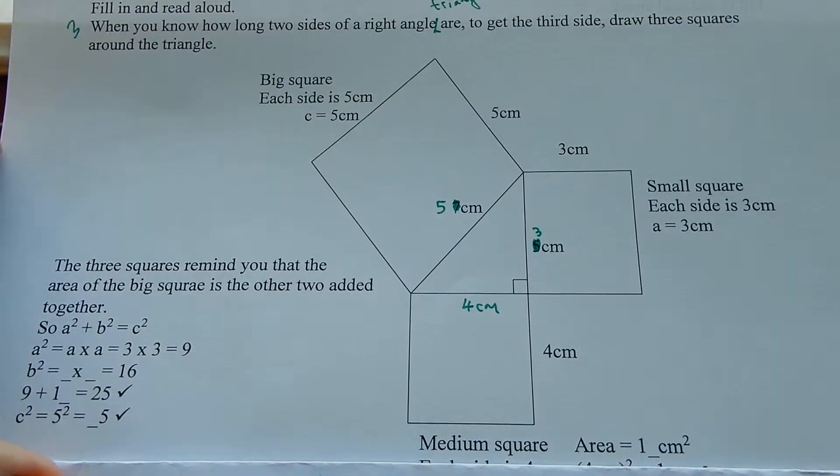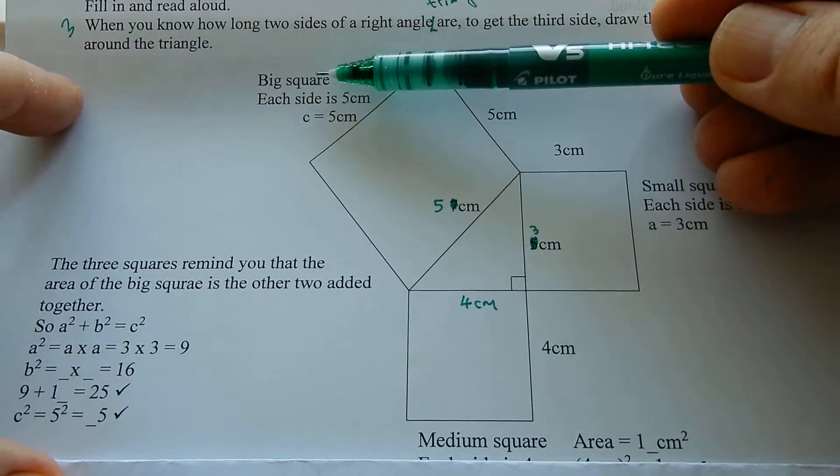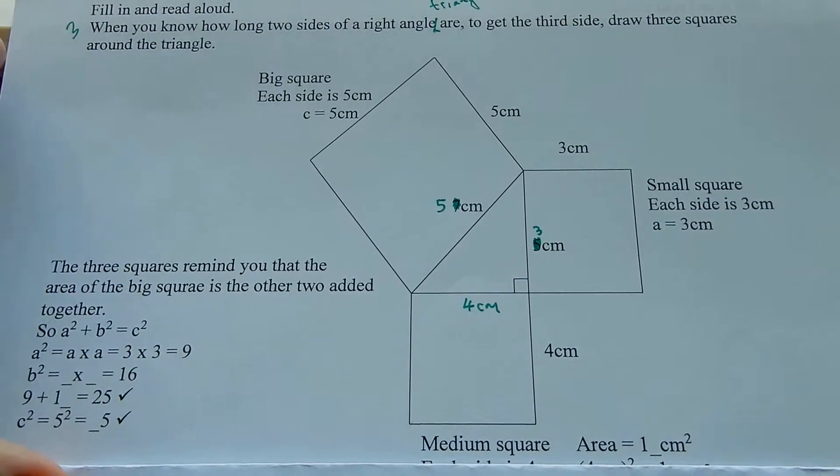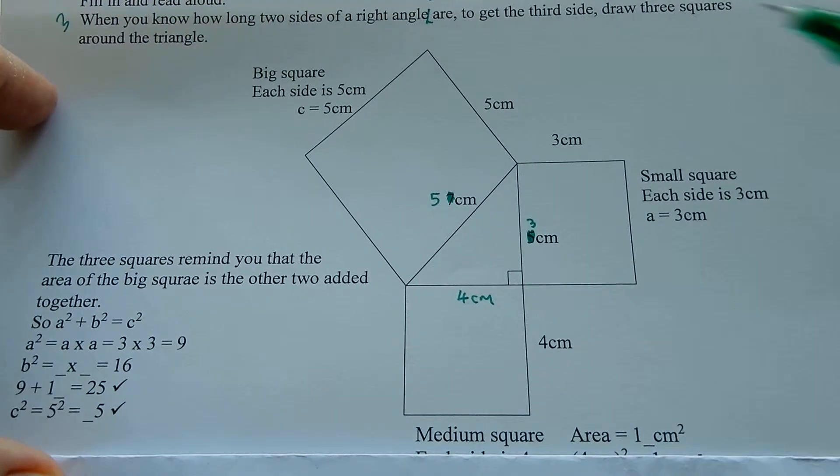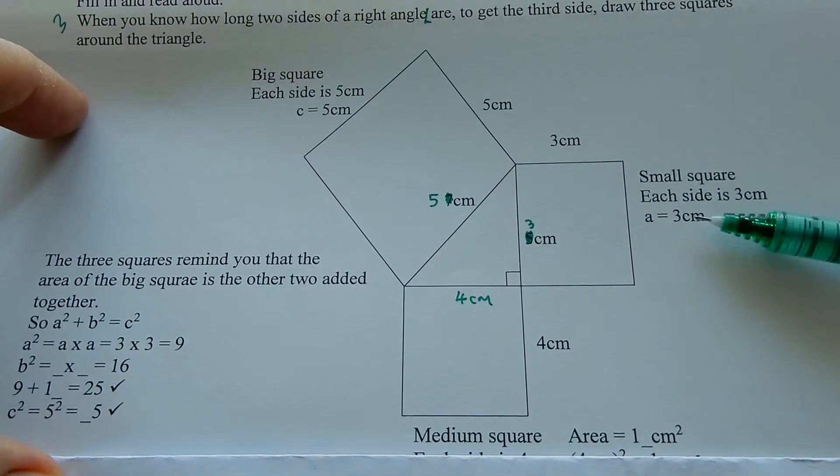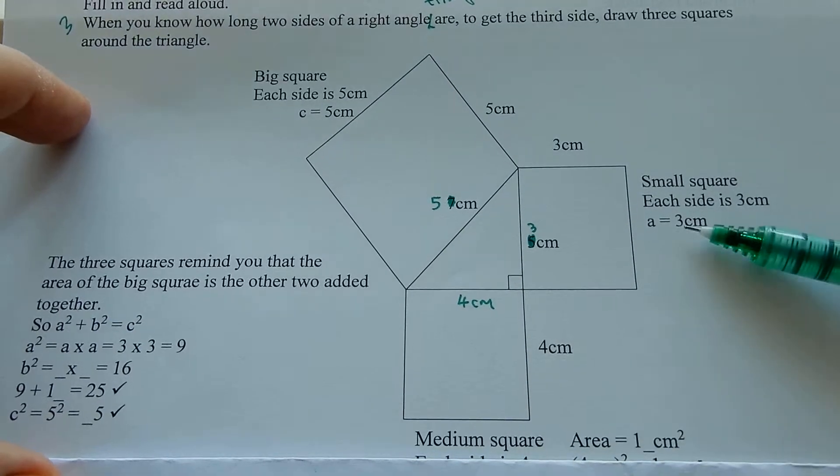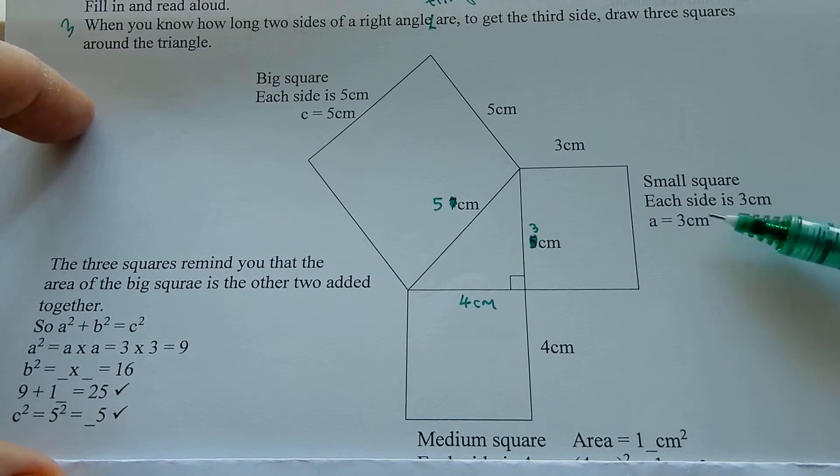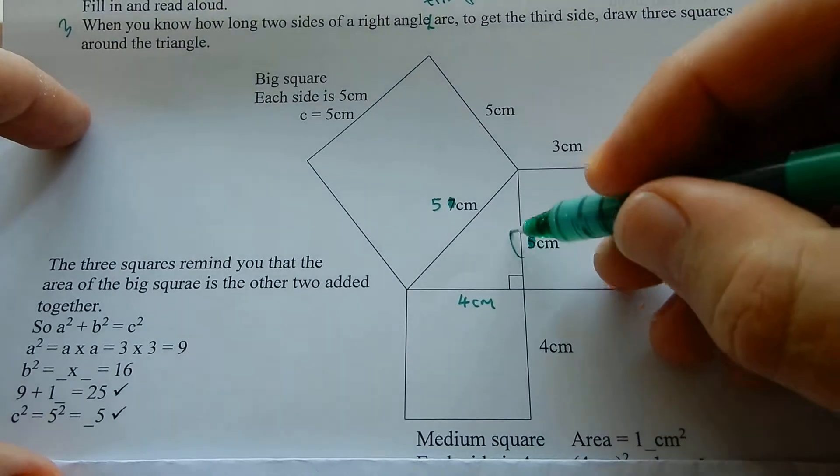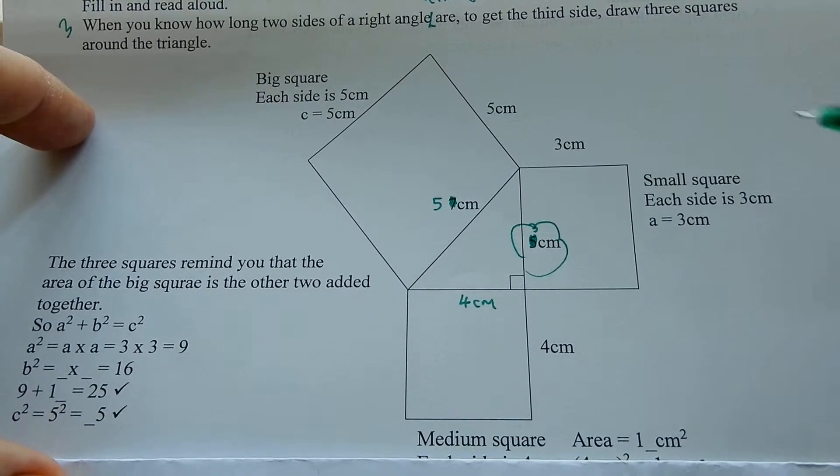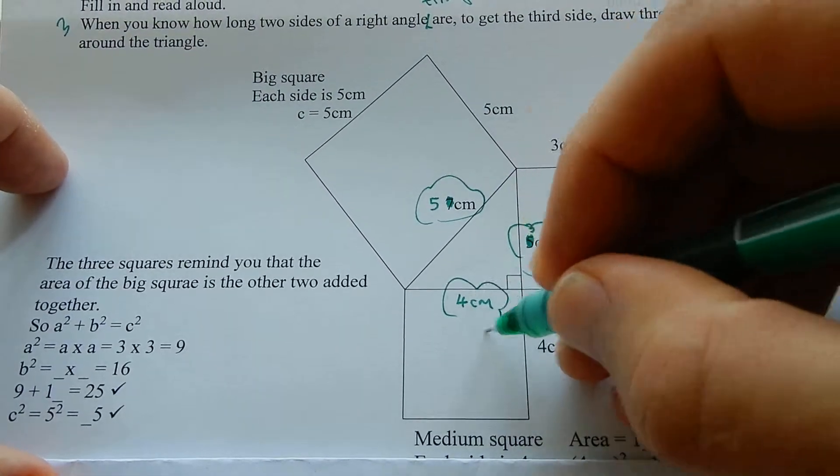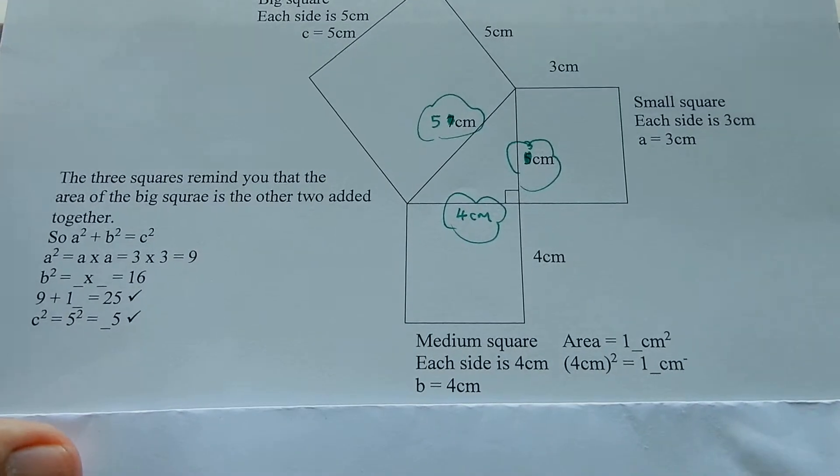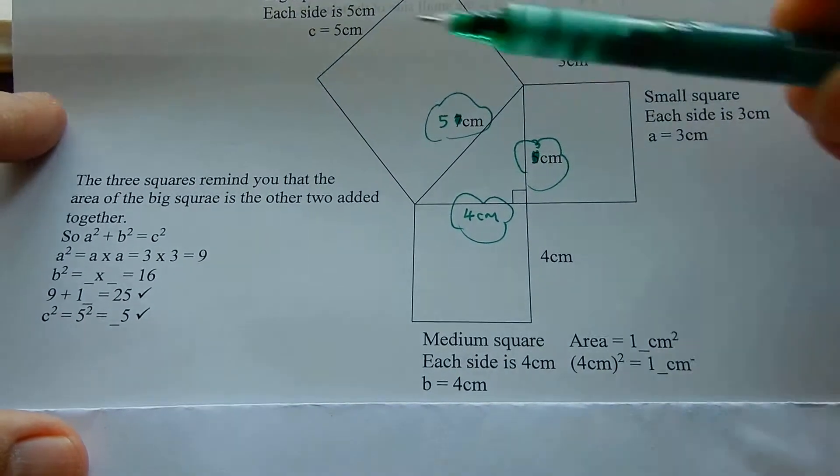It looks a bit like a rhombus, but it's a square. The biggest square, each side is five centimeters. C, which is the letter we use for how big the side is on the biggest square, C is five. A for the smallest, A, B, then C. A is three, A is the smallest side. Each square is three centimeters. A is three centimeters. B is four centimeters. There we go. B is four centimeters. Okay, so the math.